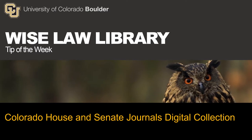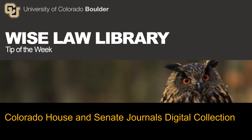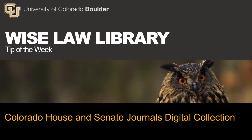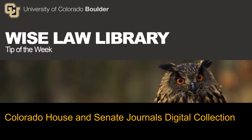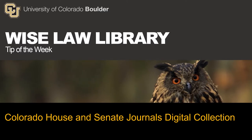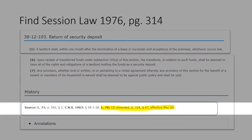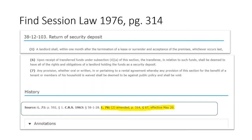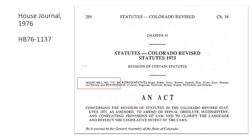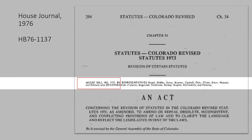In this short video, I will show you how to search the Colorado House and Senate Journal's digital collection sponsored by the University of Colorado Law Library. Our starting point will be a Session Law that was enacted in 1976 on page 314 of the Session Law volumes for that year. Looking up that Session Law in the Session Law volumes, we see that it is based on House Bill number 1137.